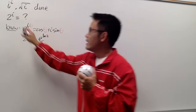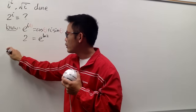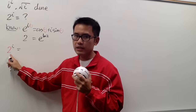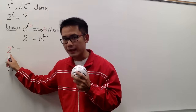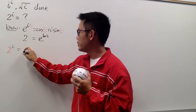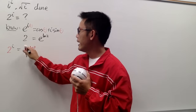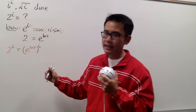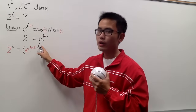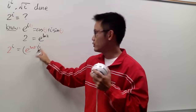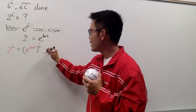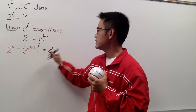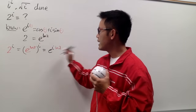Let's look at 2 to the i. I'll write down the 2 in red and the i in black. For this 2, I'm going to replace that with e to the ln 2 power — let me write it down right here — and then we'll raise this to the i power. When we have a power to another power, we multiply the powers.